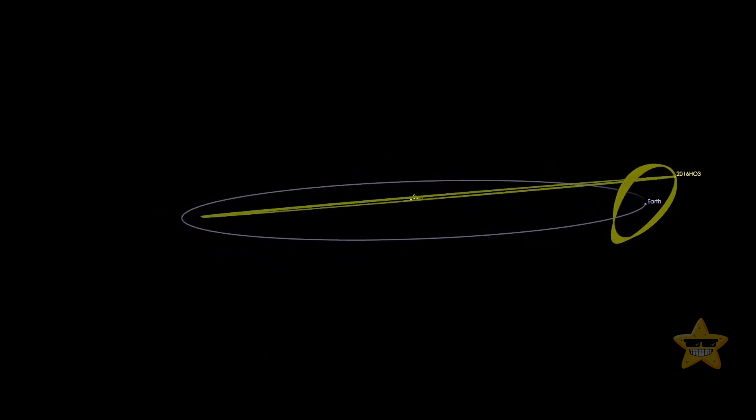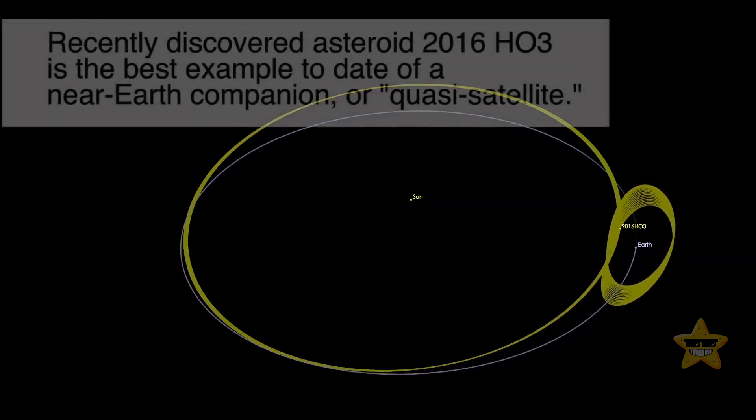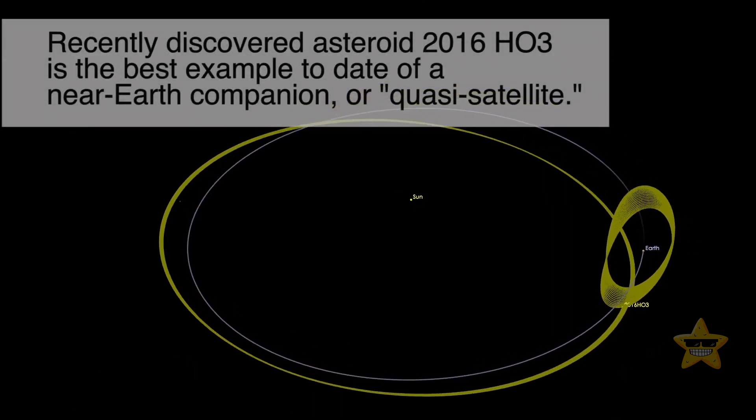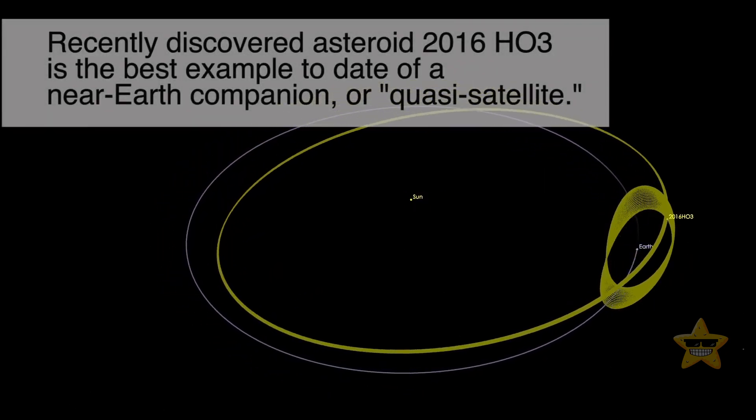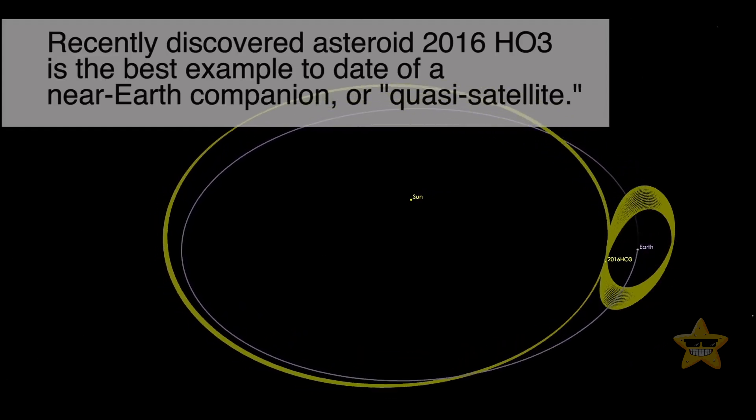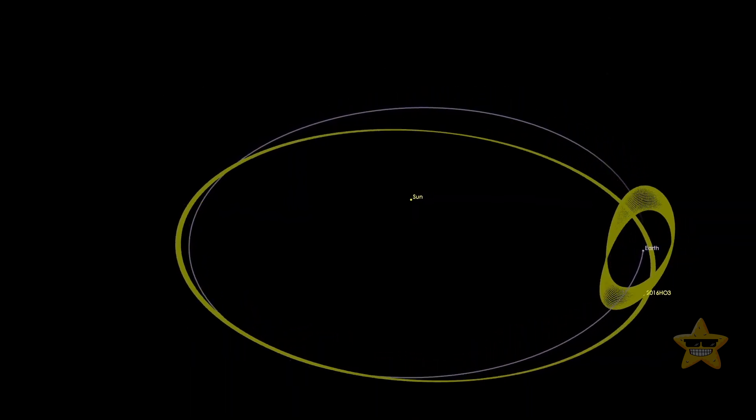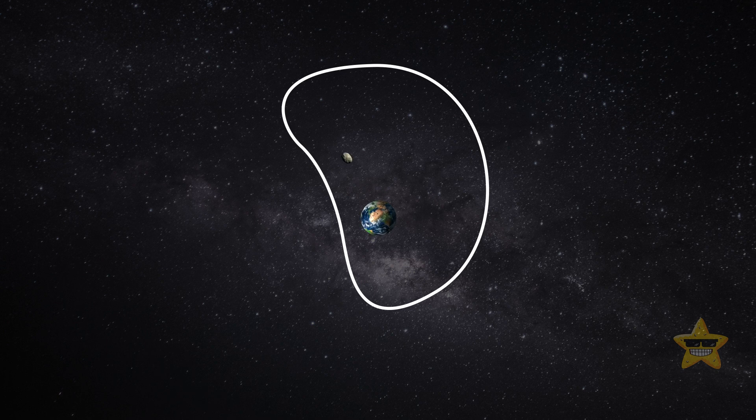That's because of the combined gravitational influences of the sun and the planet itself. Quasi moons usually have horseshoe or tadpole-like orbits. To put it simply, you can see them travel ahead or behind a planet when it orbits the sun.